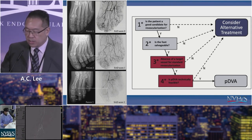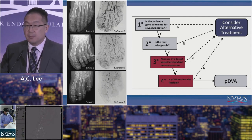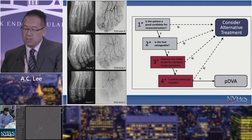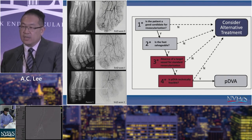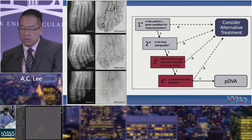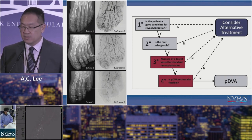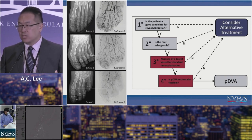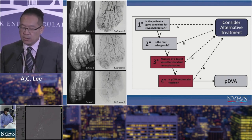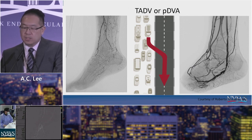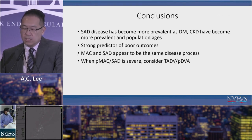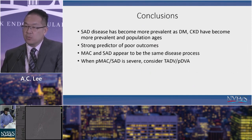Deep venous arterialization is now an option for these patients we call no-option or desert foot patients. The normal protocol is: is the patient a candidate for revascularization, is the foot salvageable, and is there a target vessel? If there is a target vessel, the patient has options like conventional endovascular revascularization or distal bypass. But if there's no distal target vessel due to SAD, the question is whether percutaneous DVA — or TADV as we're now calling it — is feasible, making it a potential option for these historically no-option patients.